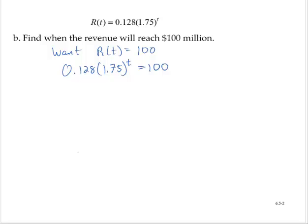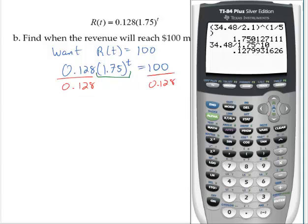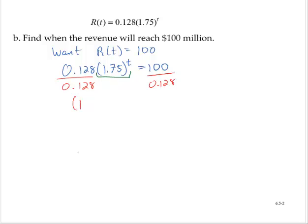Now to solve for t I'm going to write this in a logarithmic form and use the change of base rule. But I can't do that just yet, because I don't have the exponential part isolated. So I will isolate the exponential part by dividing by 0.128. So 100 divided by 0.128 is 781.25. So I have 1.75 to the t is equal to 781.25.